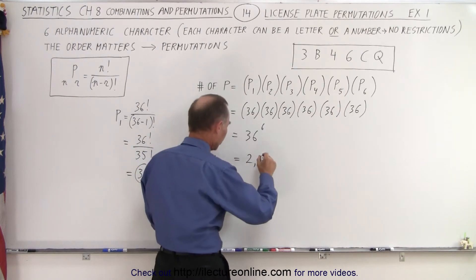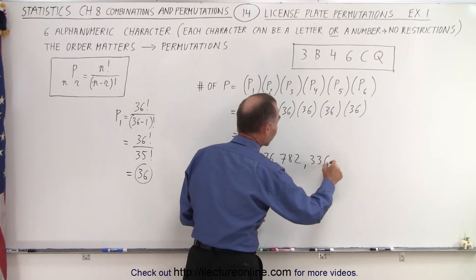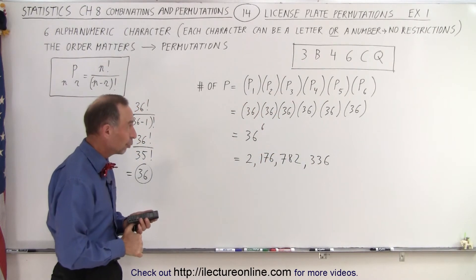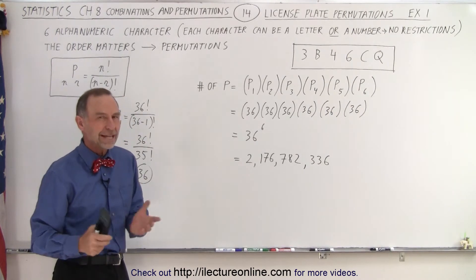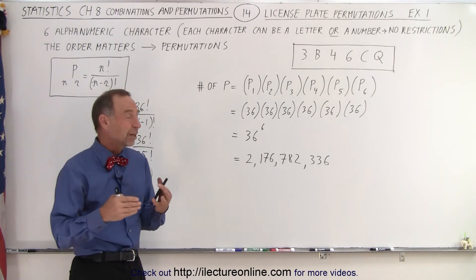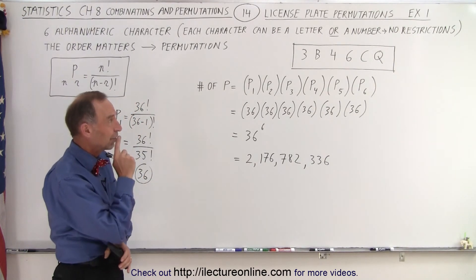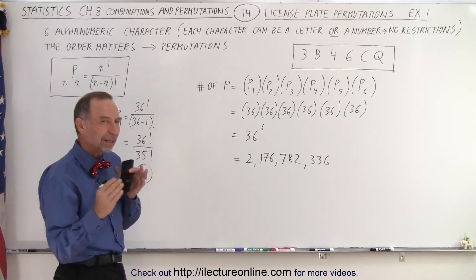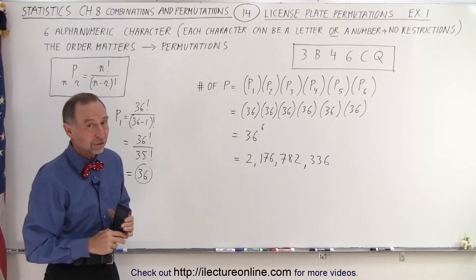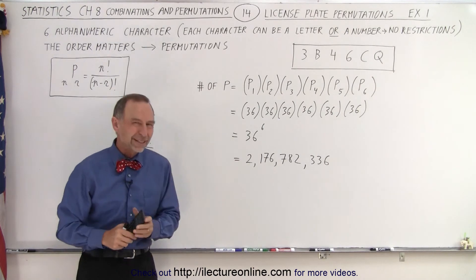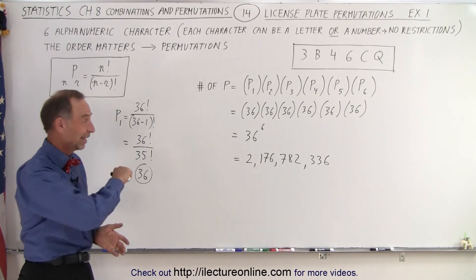That equals 2 billion, 176 million, 782 thousand, 336 different permutations — an enormous number! So why would any country or state need more than six characters on their license plate? Well, the reason is it becomes more difficult to read because you're not sure if a character is a letter or a number. States like to preserve certain places for numbers only and certain places for letters only, which reduces permutations but with only six alphanumeric characters you can still have over two billion different permutations. We'll look at some other techniques in the videos to come.